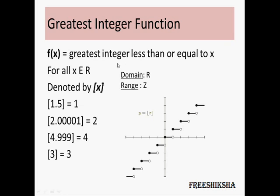So what is the greatest integer function? It is defined as the greatest integer less than or equal to x, if it is a function of x. For all x belonging to R, this function is valid and it is denoted by x under square brackets. Its domain is R and its range is only integral values — the integers.